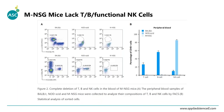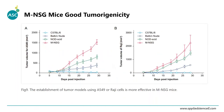Blood cell comparisons by flow cytometry show NSG and SCID mice have significantly reduced T cells and B cells, and compared to SCID mice, NK cells are completely deficient in NSG mice. Based on the characteristics of NSG mice, this model can help bridge the gap between pre-clinical research and clinical trials, especially for disease models including cancer, infectious diseases, transplantation, pharmacology, and toxicology.